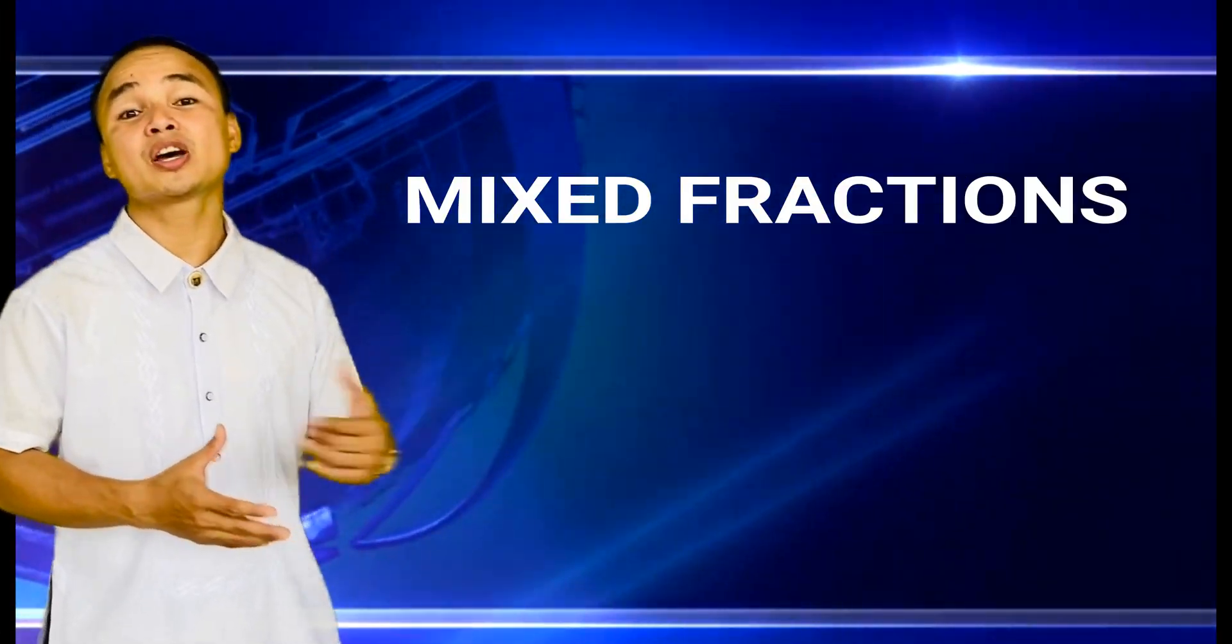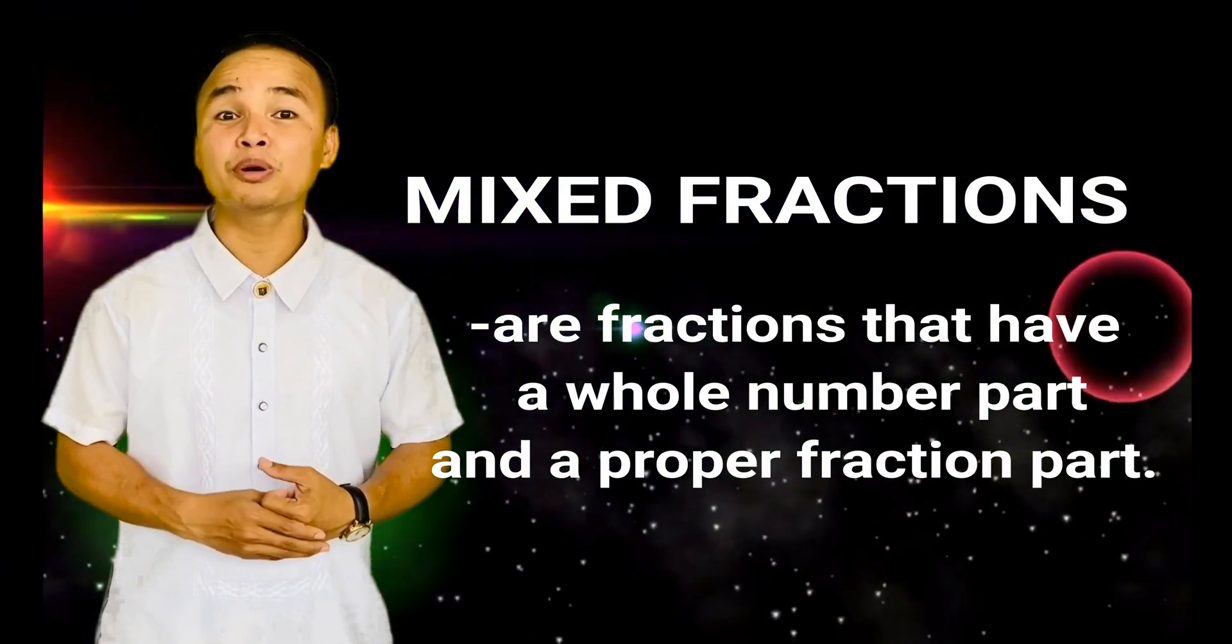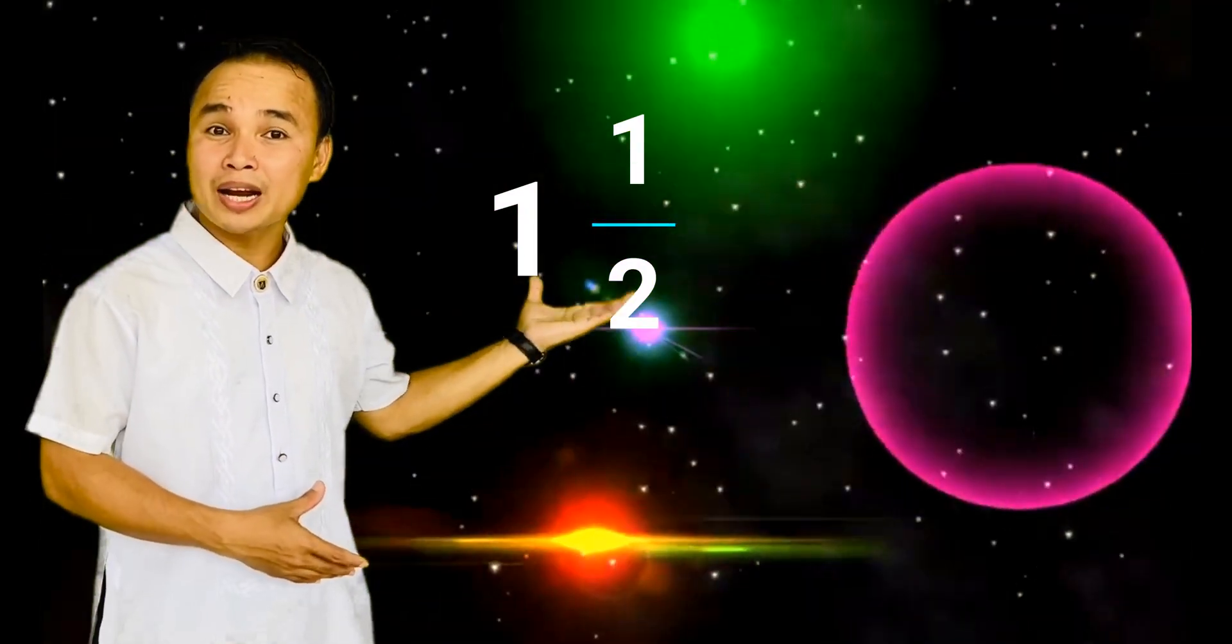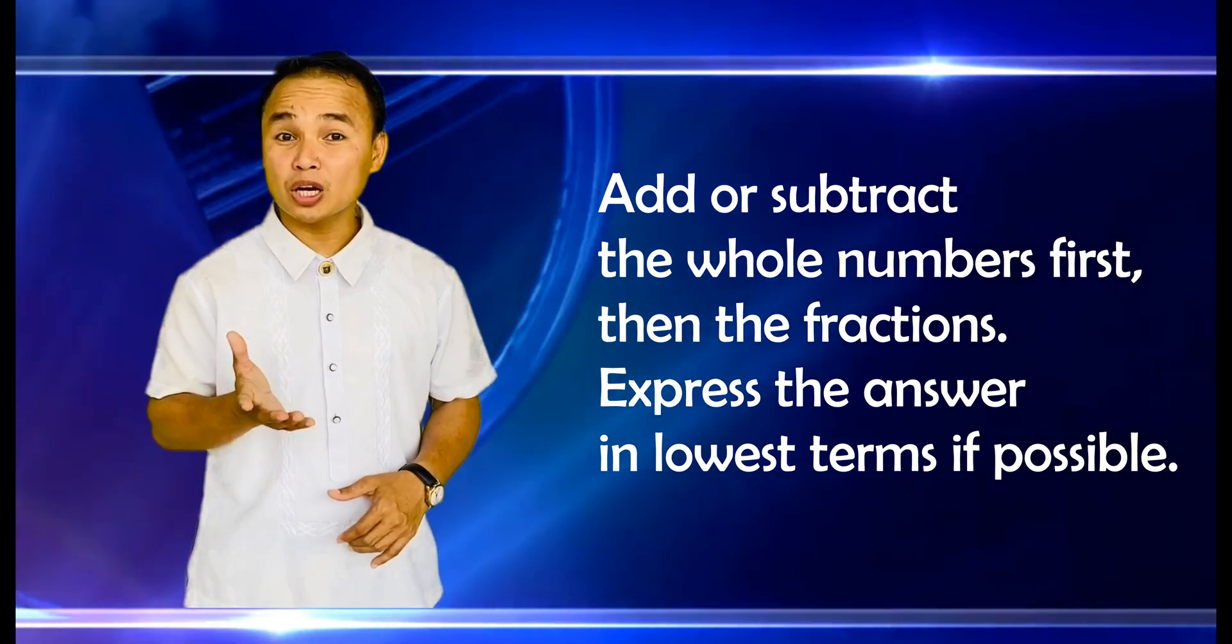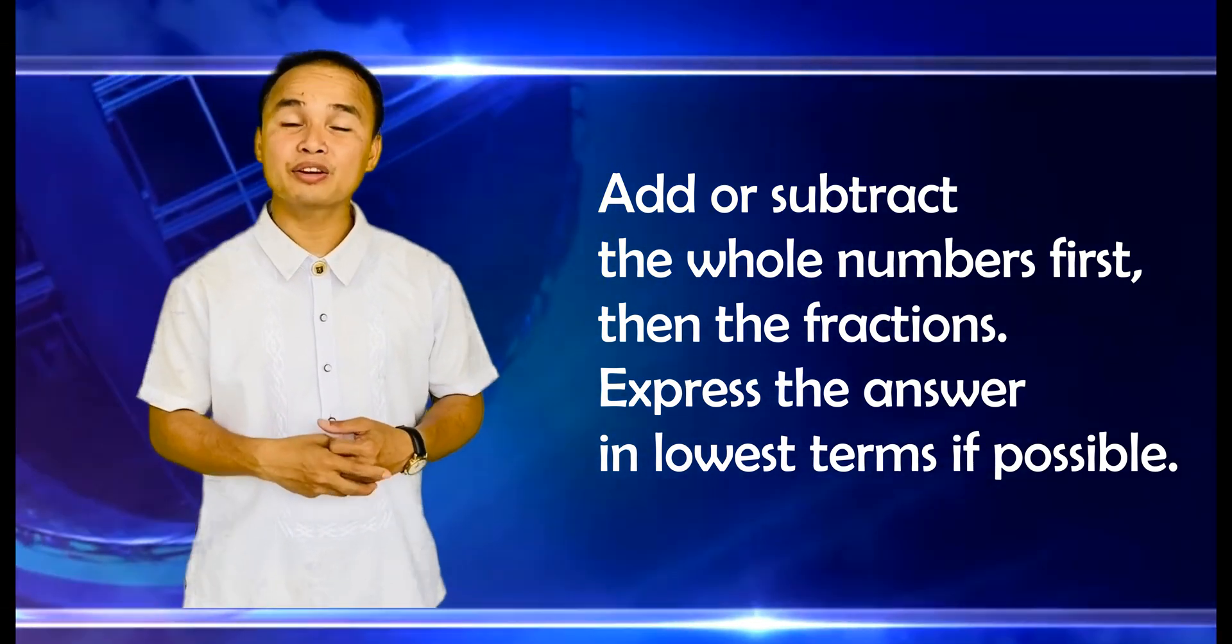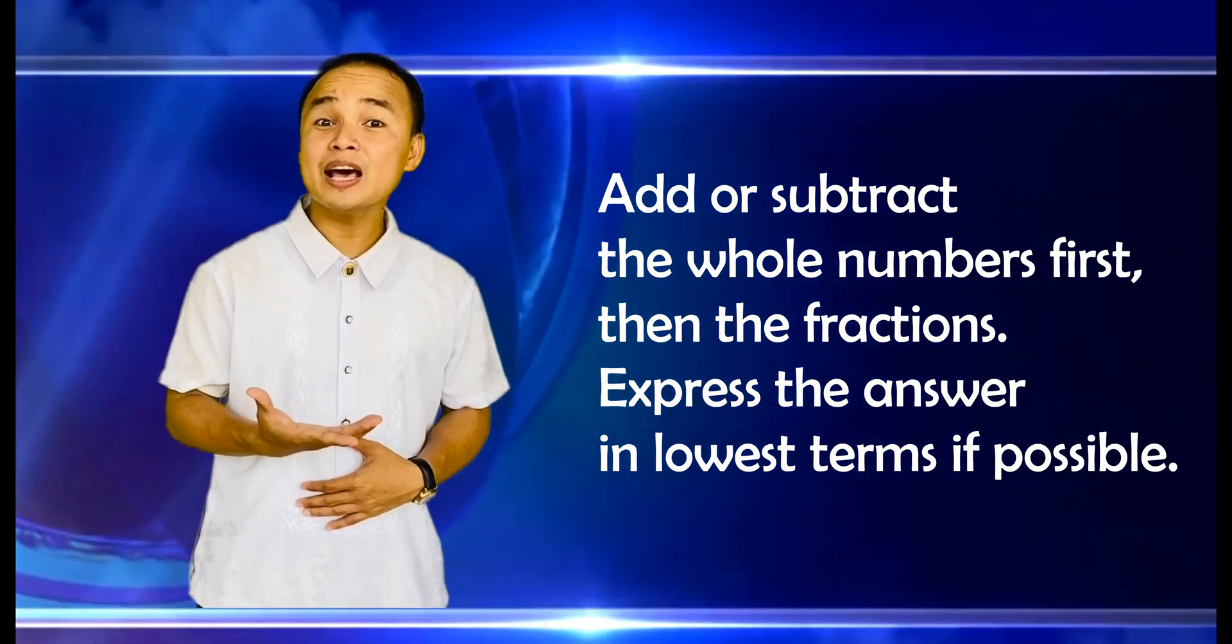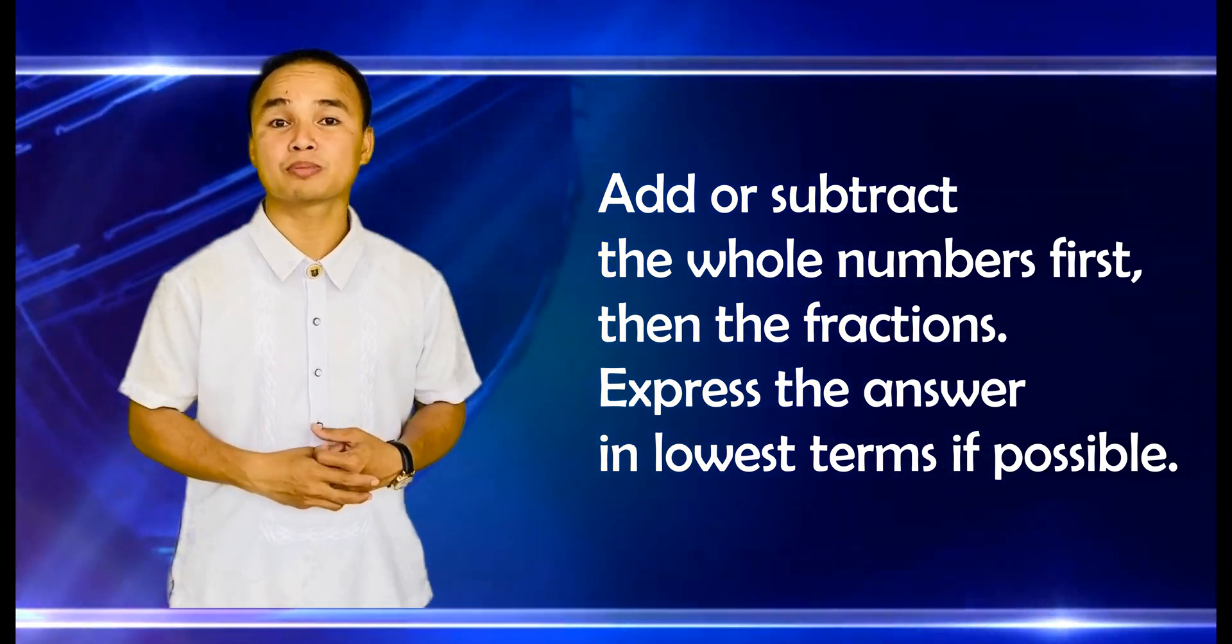Mixed fractions are fractions that have a whole number part and a proper fraction part. Such as 1 and a half and 10 and 2 fifths. How will you add or subtract mixed fractions? We first add or subtract the whole numbers then the fractions. And express the answer in lowest terms if possible.